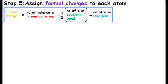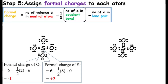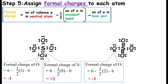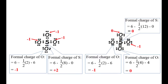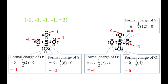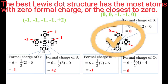Therefore, in order to determine the correct Lewis structure of sulfate ion, we need to go to the last step: calculation of the formal charge of each atom in the molecule. By using the equations of formal charge, we can determine the charge on each atom. When choosing the optimum Lewis structure for a molecule, it is important to keep the formal charge on each atom as low as possible. Therefore, this is the Lewis structure of sulfate ion.